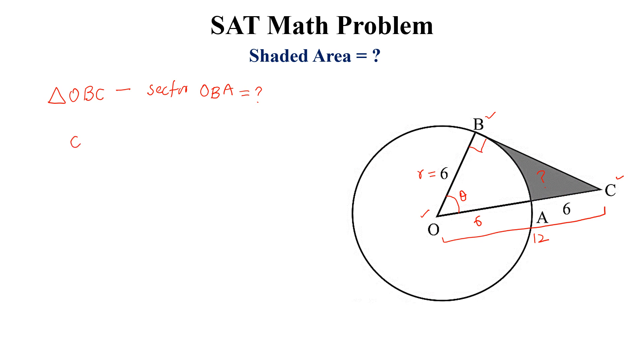And we can write cos theta equals 6 divided by 12, which is equal to 1/2, and theta equals 60 degrees. If this is 60 degrees, then this angle will be 30 degrees.